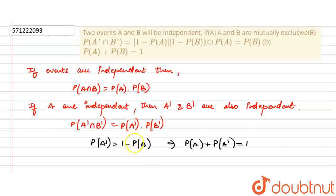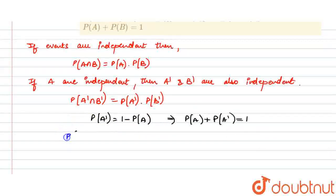So we will apply this formula to A and B. So probability of A prime intersection B prime comes out to be 1 minus P of A into 1 minus P of B.